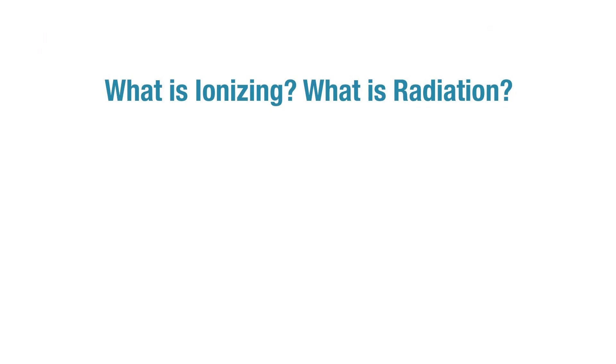Really we're talking about ionizing radiation. So let's answer this first question: what is ionizing and what is radiation? Something that's ionizing means it can remove an electron from an atom. That's the process of creating an ion, which we'll explain in more detail shortly.